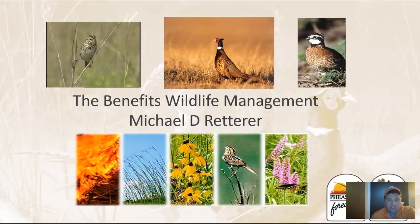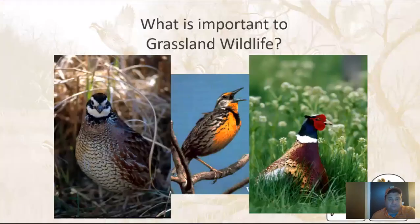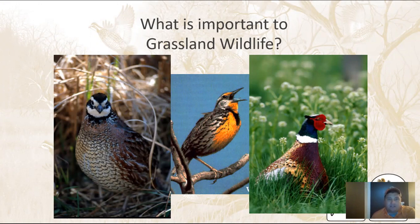How do we choose which species to manage for, or do we really have to pick just one? Before we can manage for them, we need to consider what is important to them. What are the limiting factors for that species or species that we are looking to manage for?